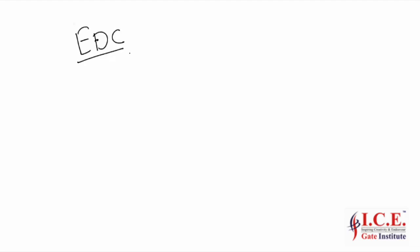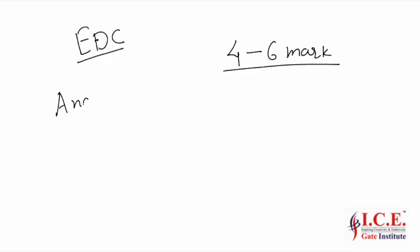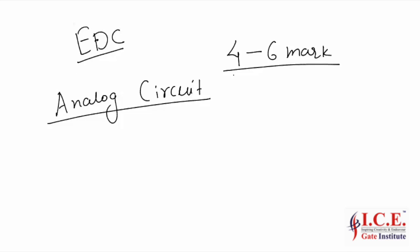An important subject of the GATE exam is Electronic Devices and Circuits, EDC. This subject carries around four to six marks in the GATE exam out of hundred. It is also important as far as analog electronics is concerned, because most of the topics in analog electronics are based on the concepts of EDC. We will start our discussion with energy band diagram.